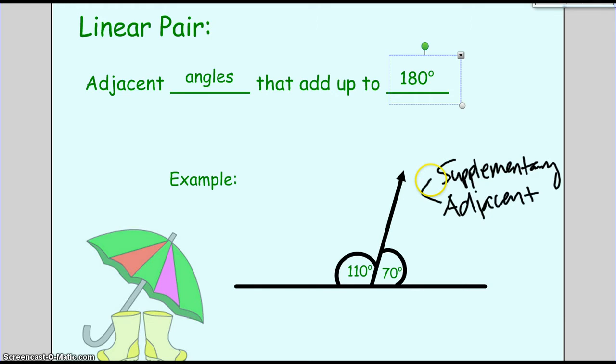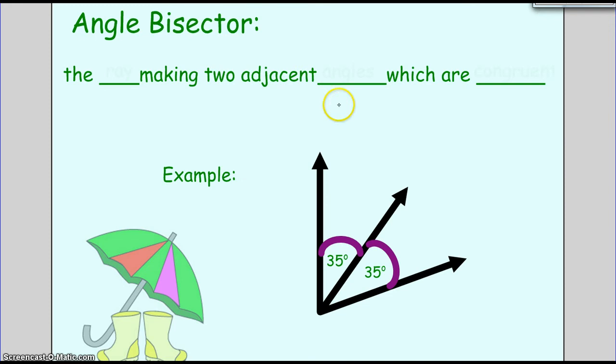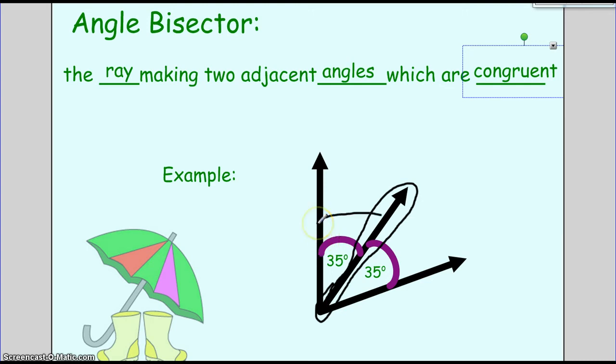Angle bisector: the ray making two adjacent angles which are congruent. Basically, what this ray is doing is cutting this angle in half. So that's what bisecting means - it means I'm cutting it in half.